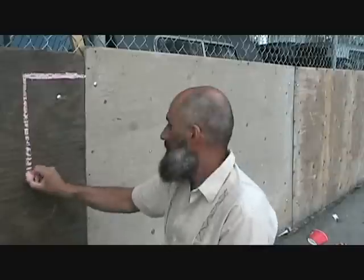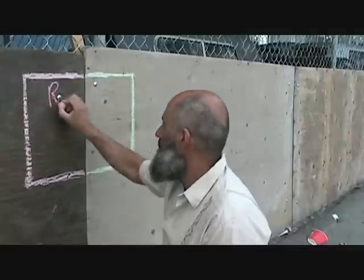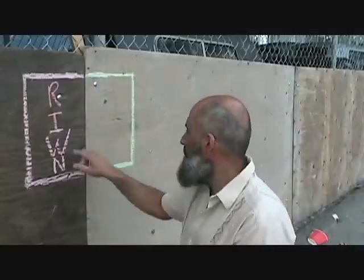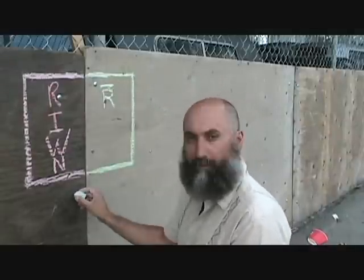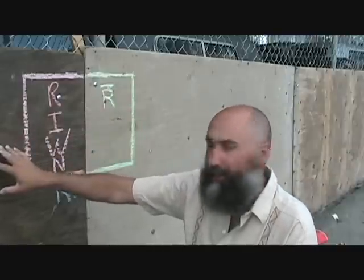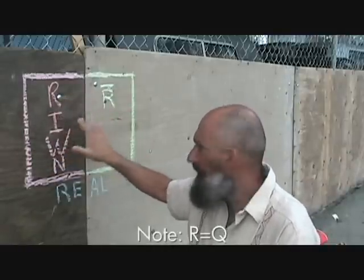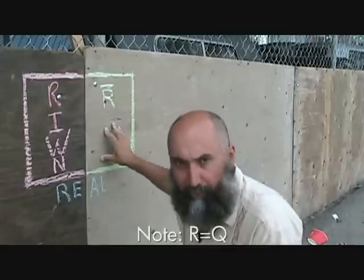If you remember, the first thing we got into when we started talking about the Language of Mathematics was the real number set. Let's do a little sketch of it and talk about each subset really quickly. We talked about this before — basically this is the real number set. On this side are the rational numbers and on this side are the irrational numbers.